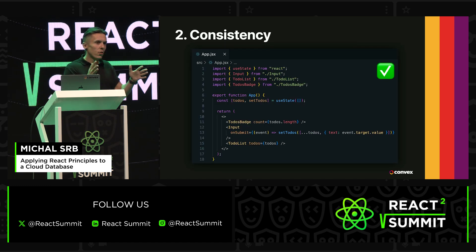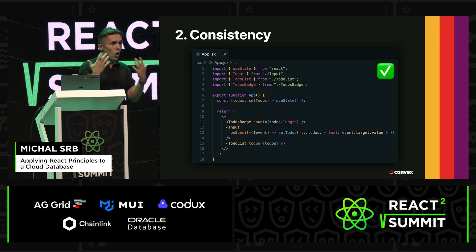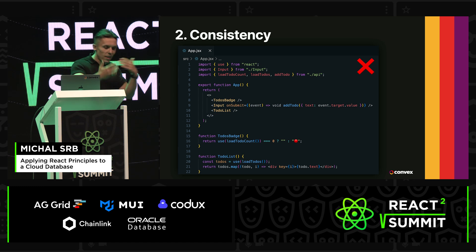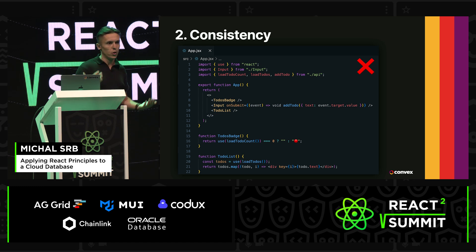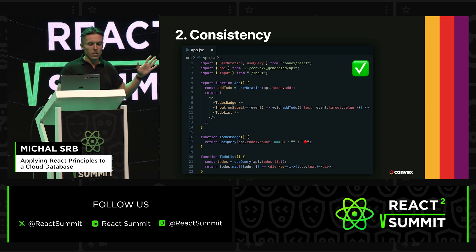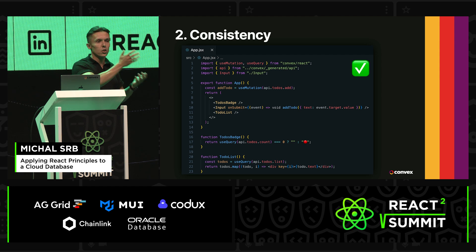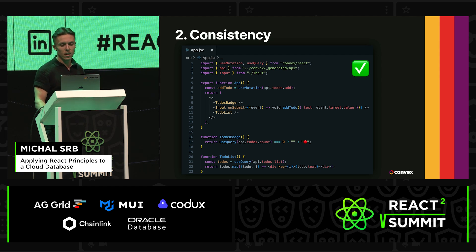Client-side React itself doesn't have this problem. If you have some state and then you're rendering a tree of React components, the view you get is always consistent. But once we add a database and we separate the data fetches, you might get an inconsistent view from your database. Convex, on the other hand, is always consistent. When the data changes, the database figures out that those two reads need updating and pushes the update together to the client, and then the client instructs React to render a consistent result in a single pass.